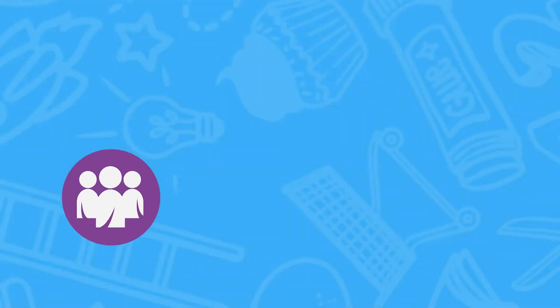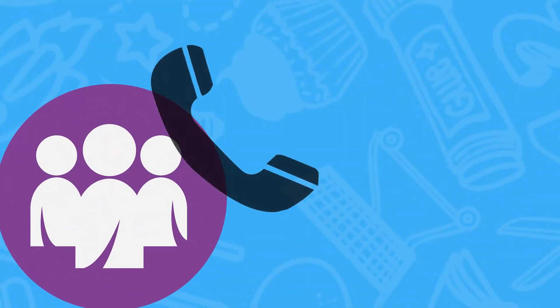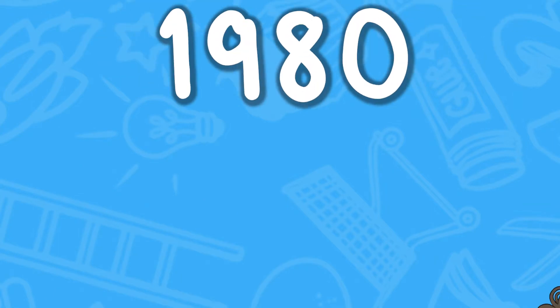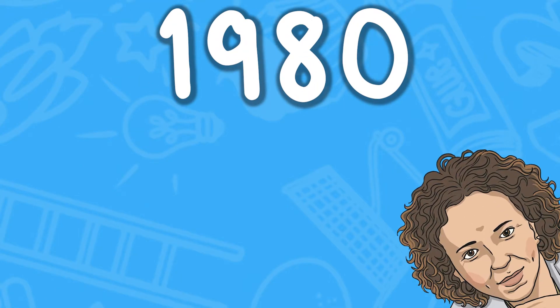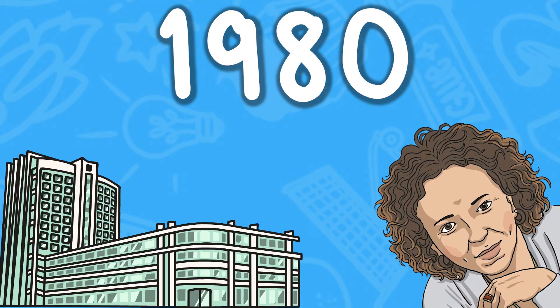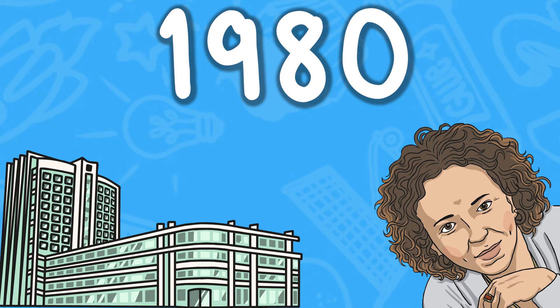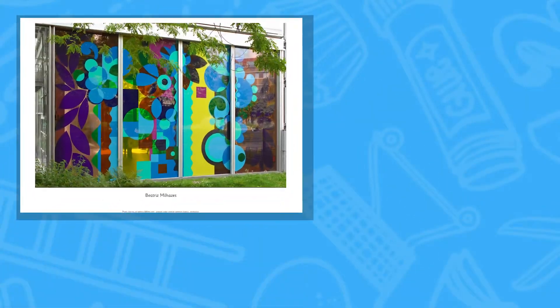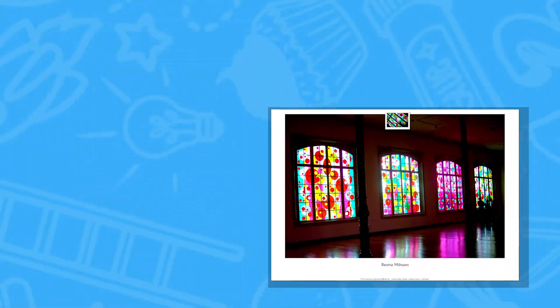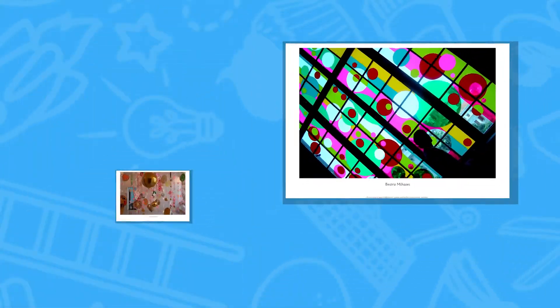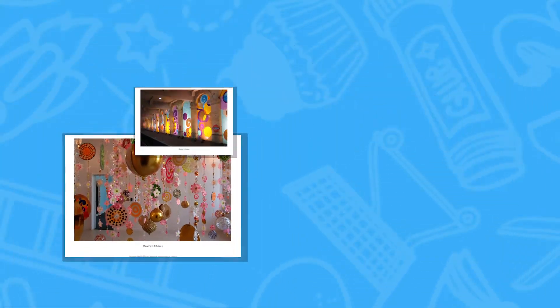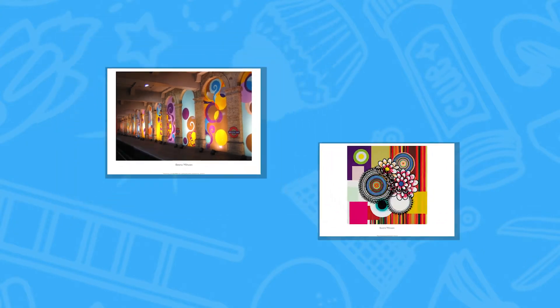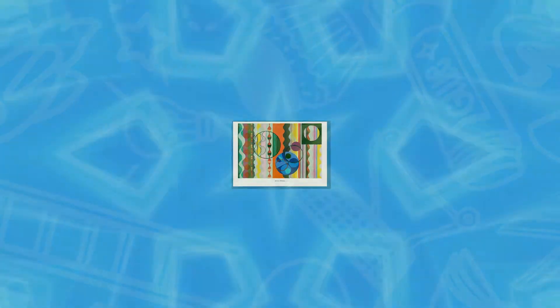Miazes started her career studying social communication, but in 1980 she began to take courses at a school of visual arts in Rio de Janeiro. Miazes is a conceptual artist — she uses geometric shapes and bright colours to create her artwork. They could be described as a kaleidoscope.